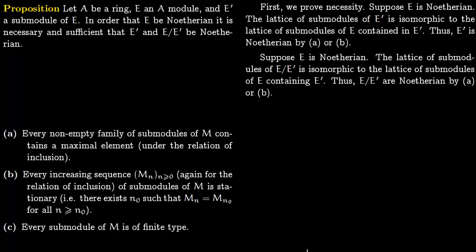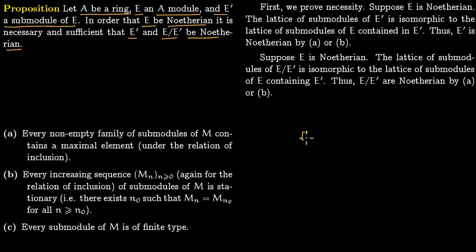Now we will discuss some properties of Noetherian modules. Let A be a ring, E an A-module, and E prime a submodule of E. E is Noetherian if and only if E prime and E modulo E prime are both Noetherian.